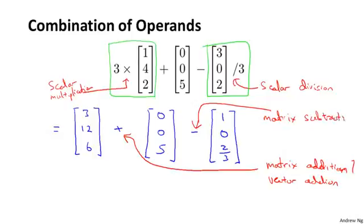But because this is a 3 by 1 matrix, this is actually a vector. So this is also vector subtraction as well.